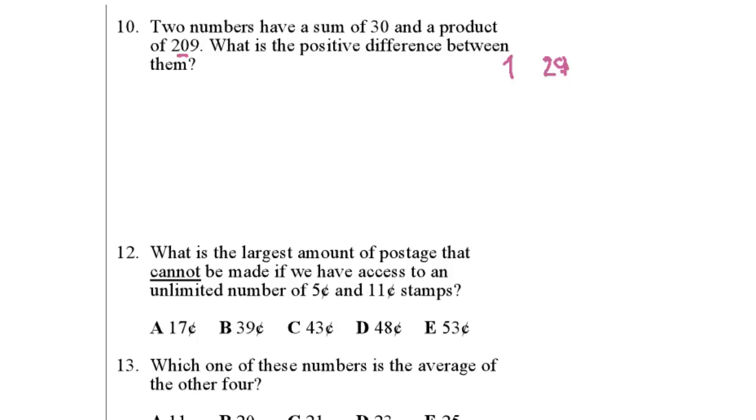I know that the sum is 30. It can be 1 and 29. 1 plus 29 is 30. How about the product of 1 and 29? It's 29 only and I want something with a product of 209. That means I need to have a smaller difference between the two numbers. If you try something like 15 and 15, 15 plus 15 gives you the sum of 30 as well. How about the product 15 times 15? 15 times 15 is 225.